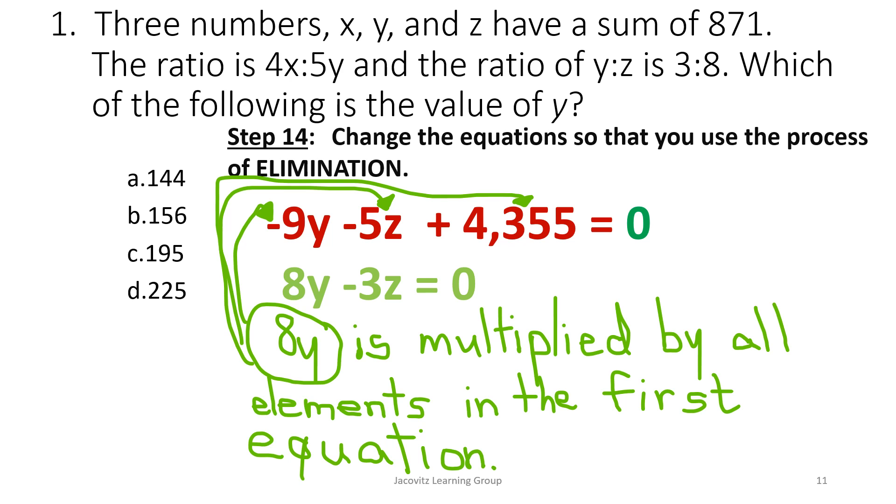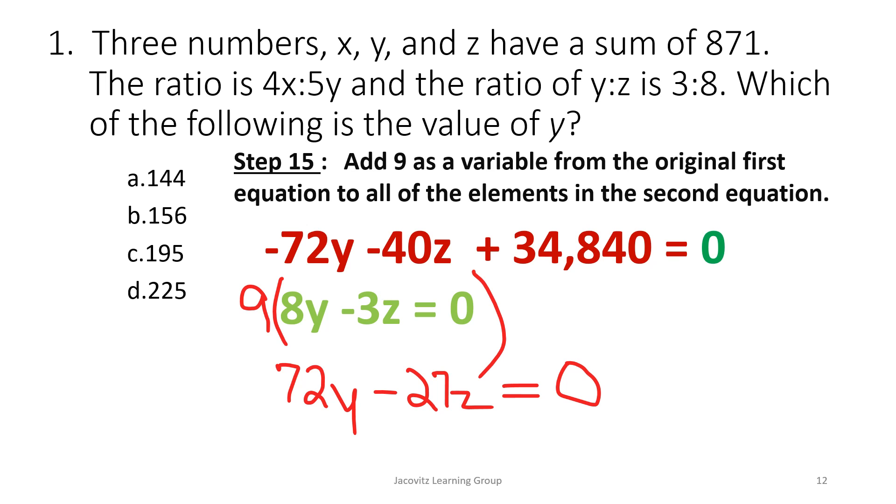Okay? Guess what? You want to eliminate something? You can multiply 8 by all parts of the equation. Let's do that. 9 times 8 gives you, if you do it here, gave you an original negative 72y, negative 40, because it went against all the other parts of the equation, plus 30. Now you have 34,840 equals 0. And then you take it by this side. It's 9 times 8 is 72y. And then 9 times negative 3 is going to give you negative 27z. And then it equals 0.